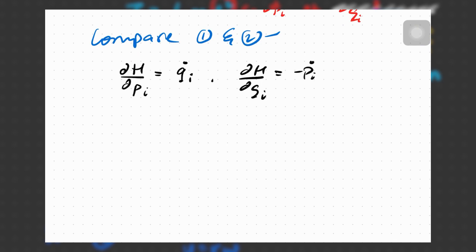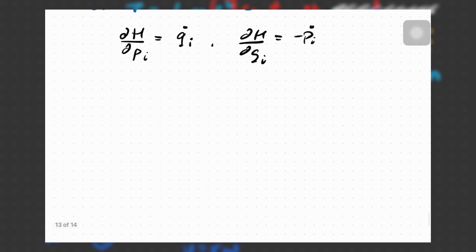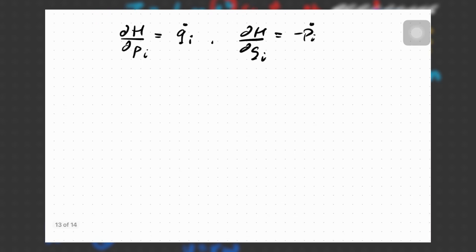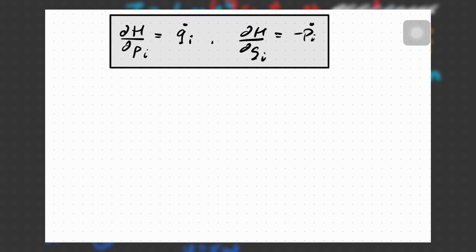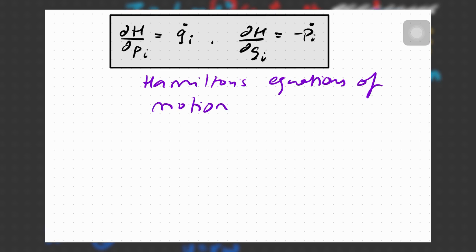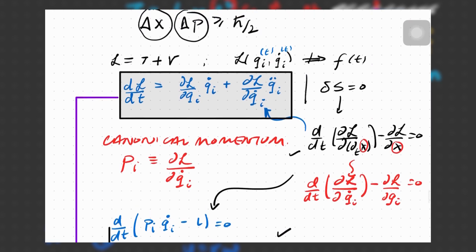These are Hamilton's equations of motion. If you simply have the Hamiltonian and find its derivative with respect to the canonical momentum, you get the time derivative of the generalized coordinate. And if you find the derivative with respect to the generalized coordinate, you get the negative of the time derivative of the generalized momentum. This is really powerful — once you have a Hamiltonian written down, you don't have to solve the Euler-Lagrange equation; you can simply use Hamilton's equations, which often saves a lot of time.